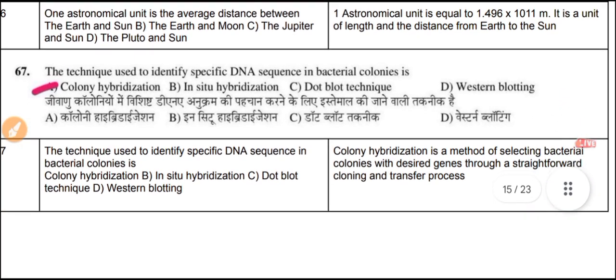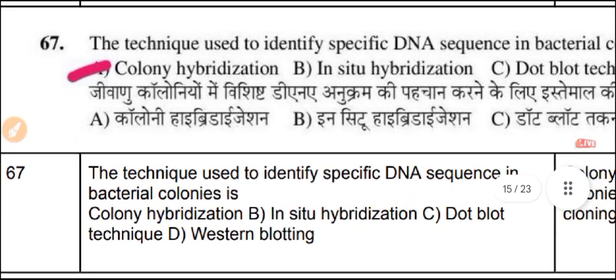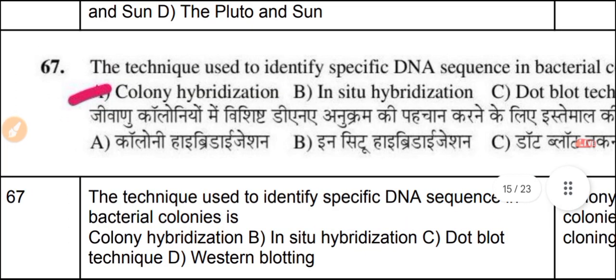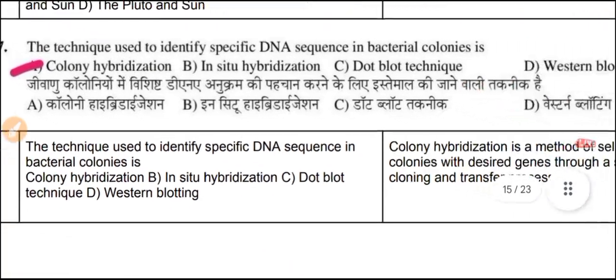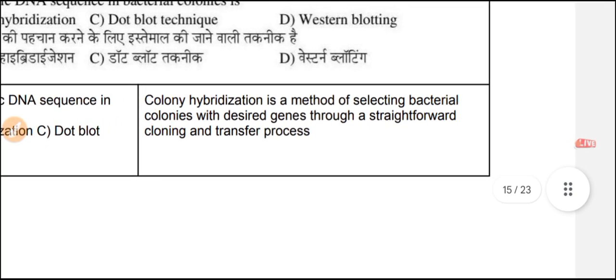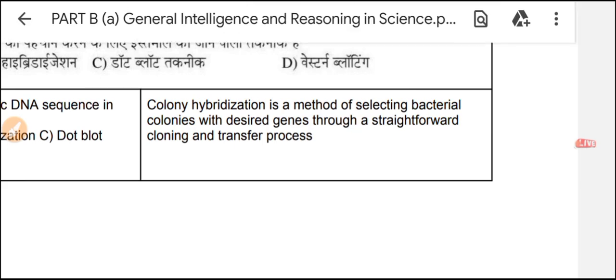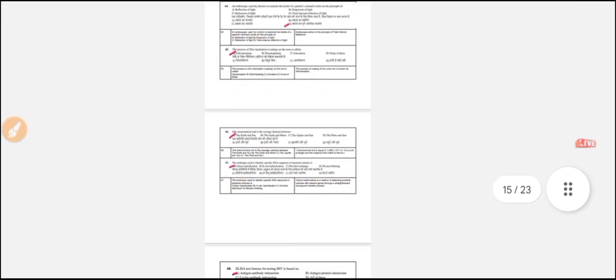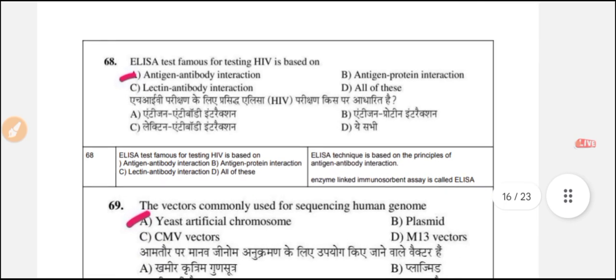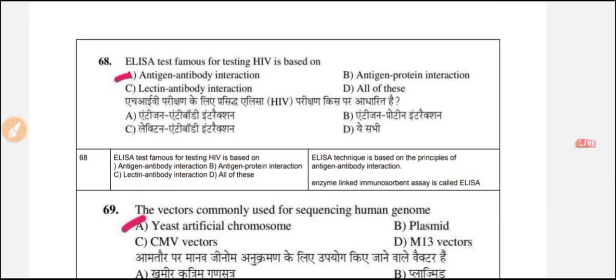Question 67: The technique used to identify specific DNA sequences in bacterial colonies is called colony hybridization. Colony hybridization is a method of selecting bacterial colonies containing desired genes, which are transferred and screened through a hybridization process.